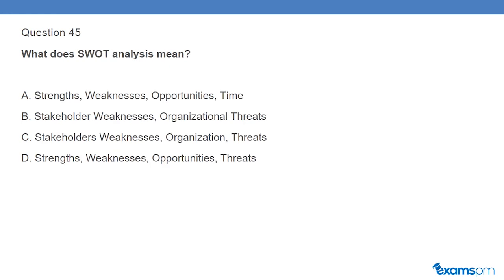Question 45: What does SWOT analysis mean? A. Strengths, Weaknesses, Opportunities, Time. B. Stakeholder Weaknesses, Organizational Threats. C. Stakeholders, Weaknesses, Organization, Threats. D. Strengths, Weaknesses, Opportunities, Threats.